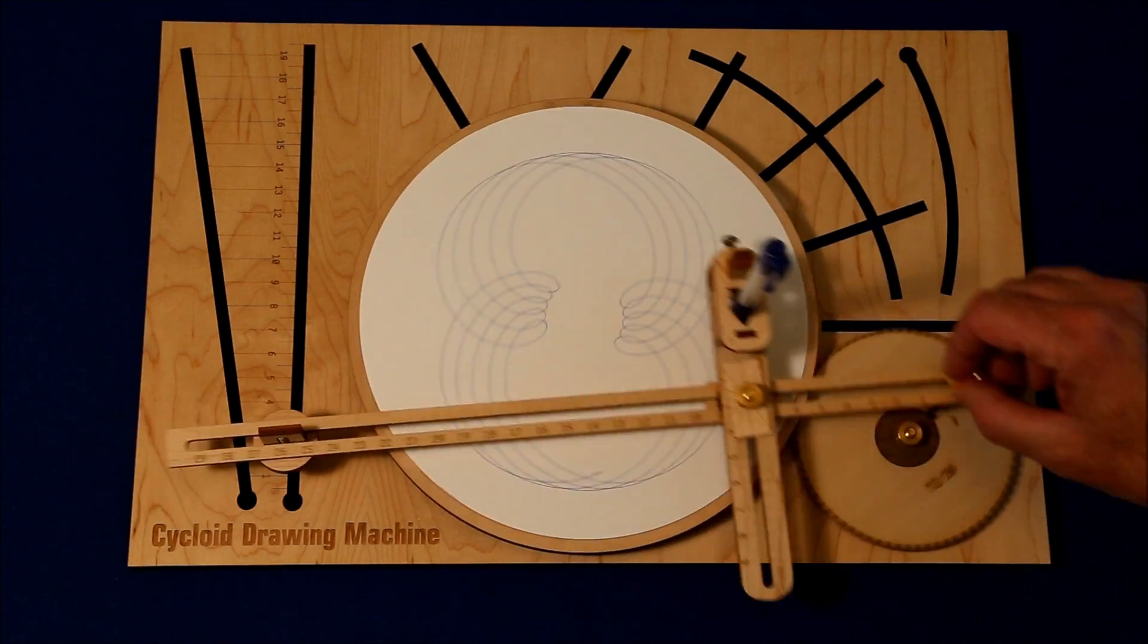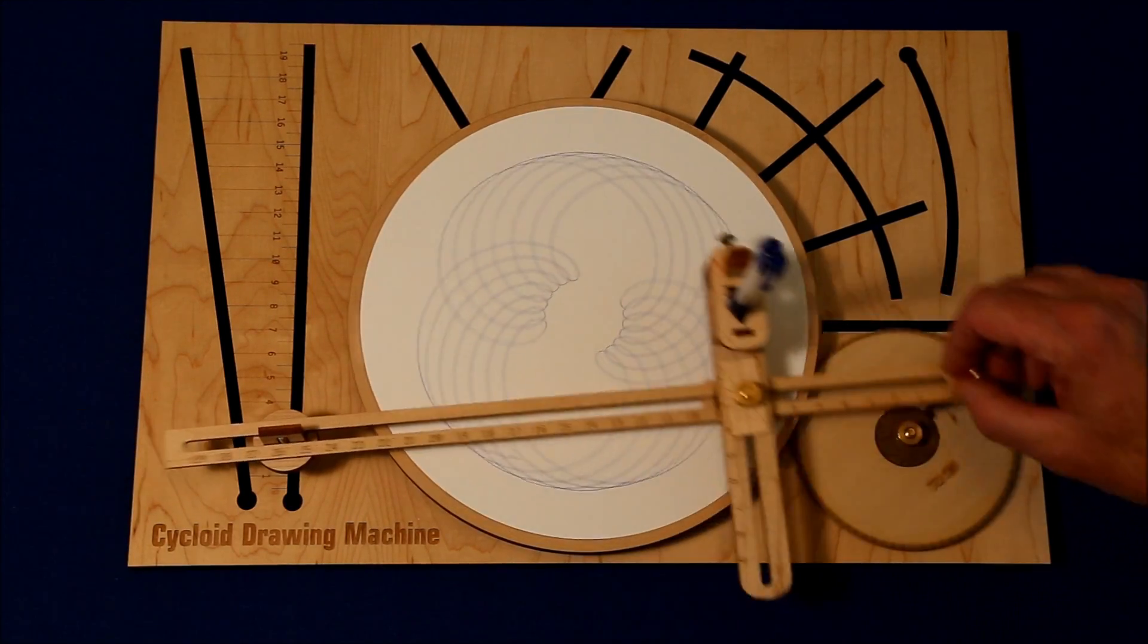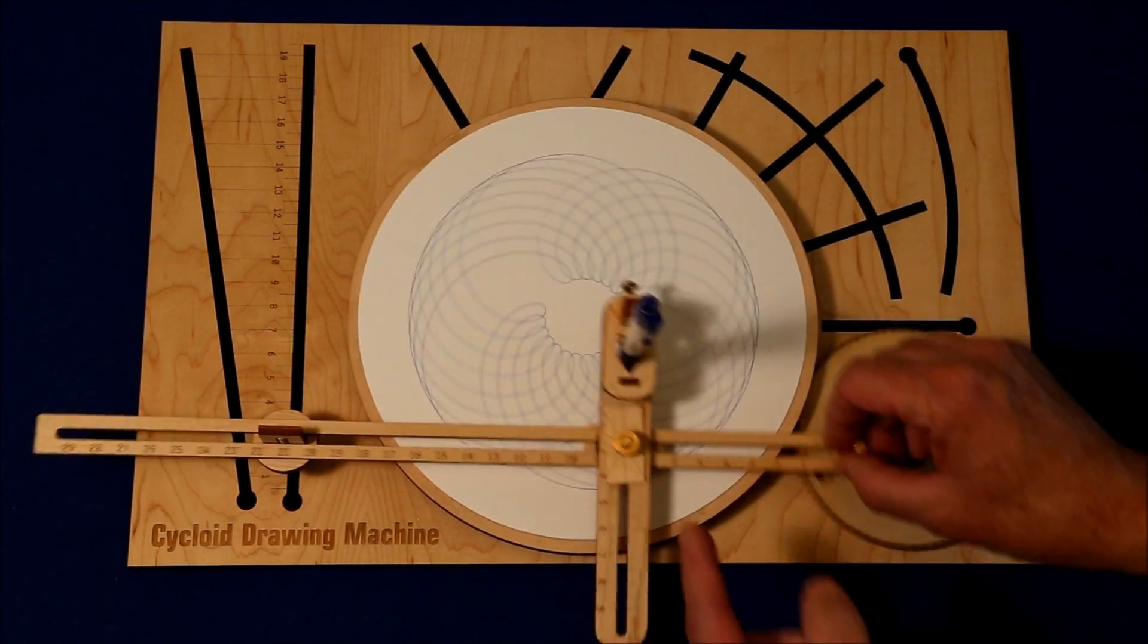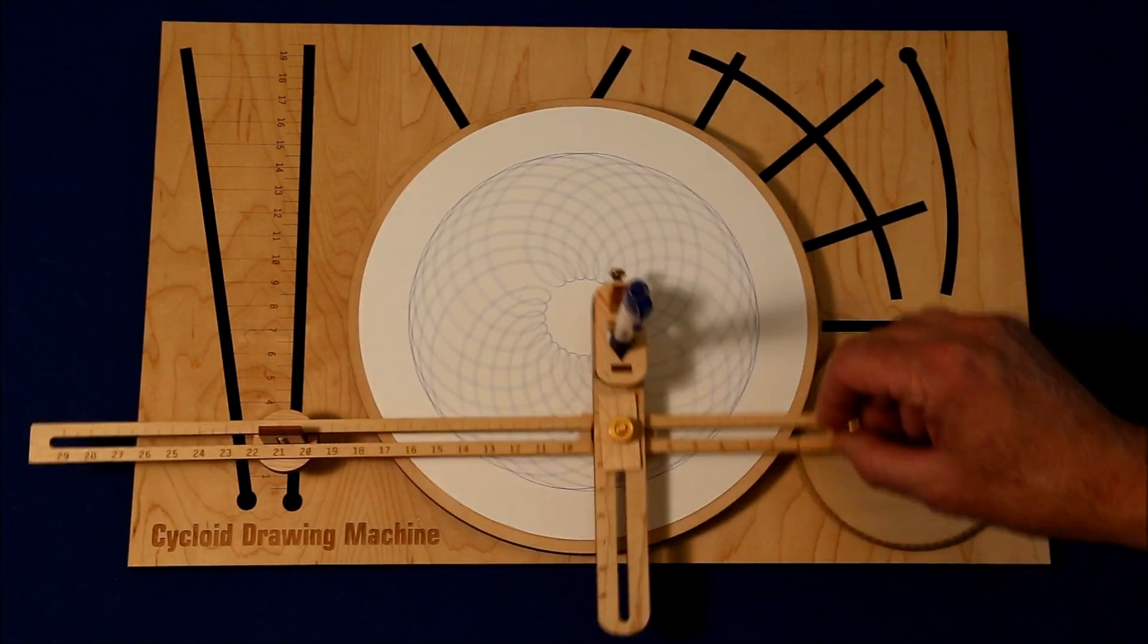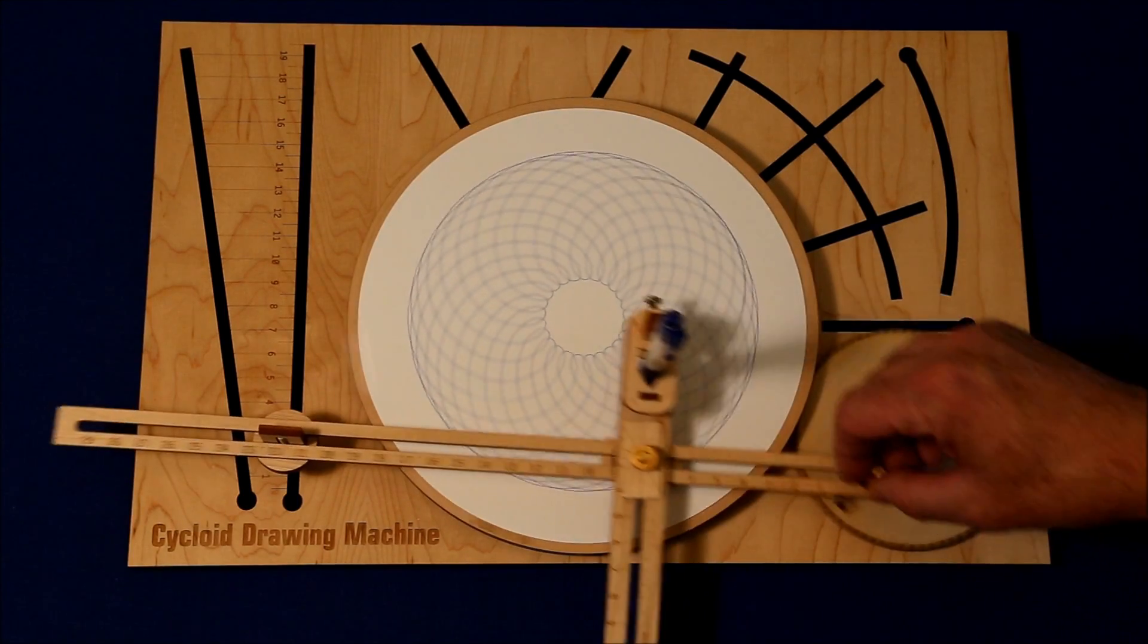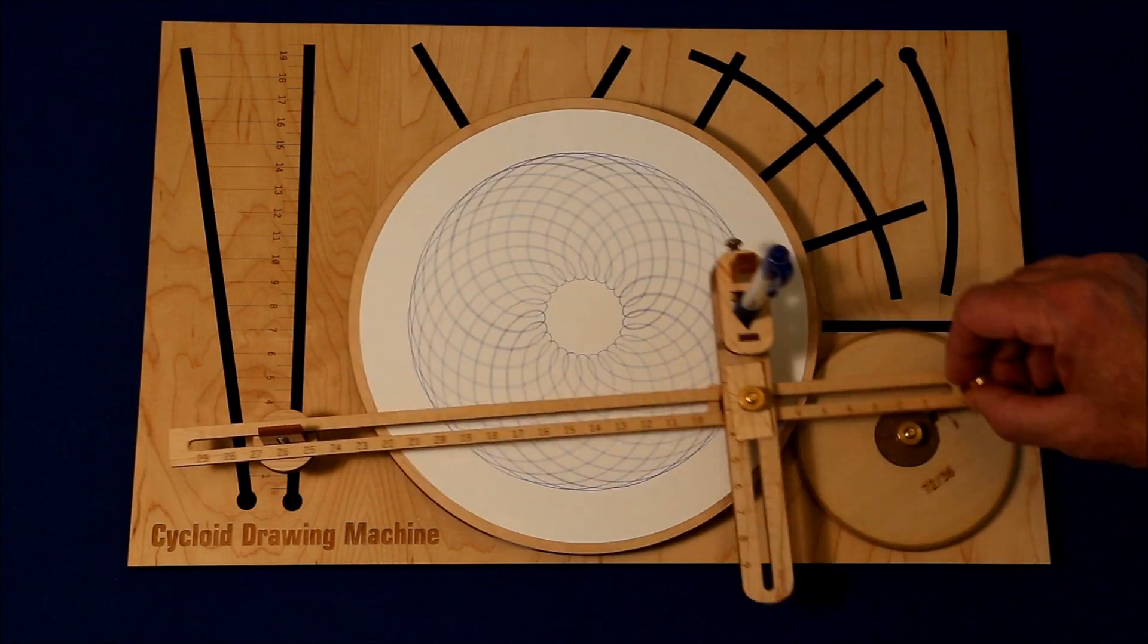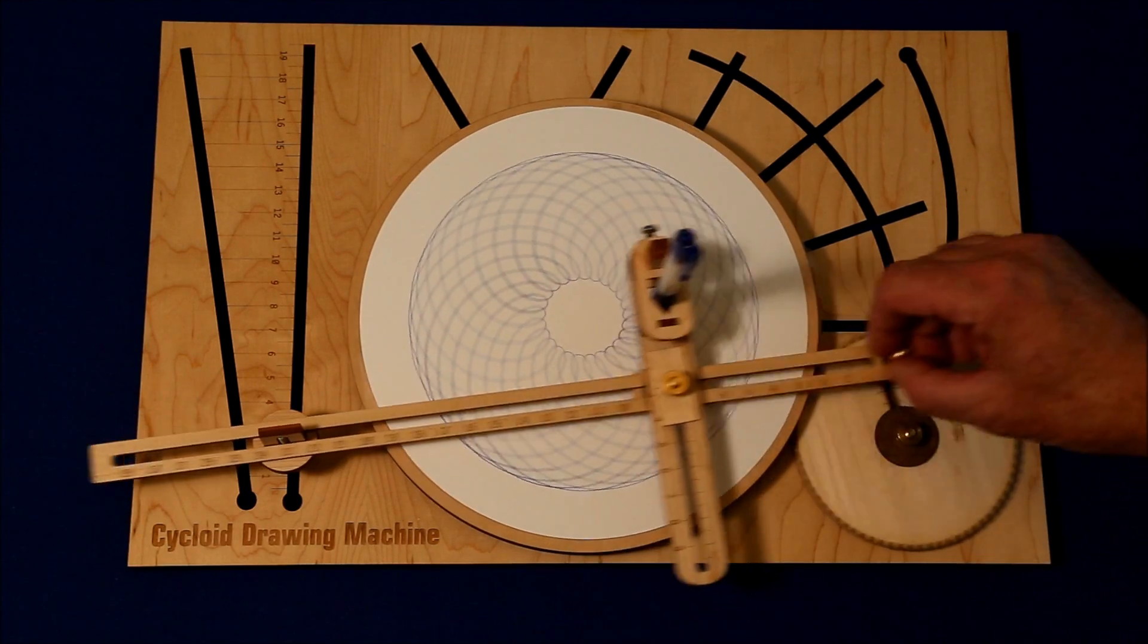There are 21 separate gears that come with the cycloid drawing machine. Each one of them will have an impact on how this image develops. Additionally, you can adjust the position of the pen back and forth up and down, the location of the fulcrum up and down, the location of the pivot point on this arm up and down. With the result that you can control the image to a degree that no other machine can offer.